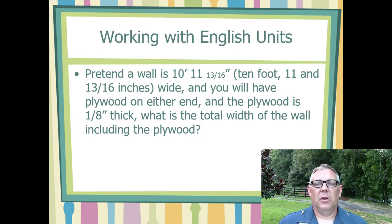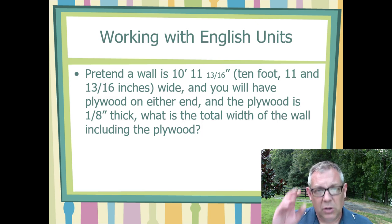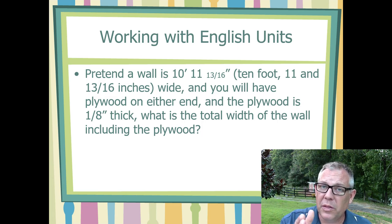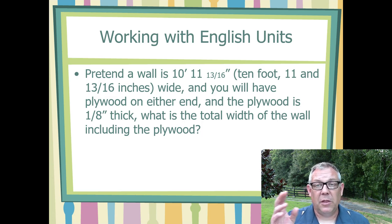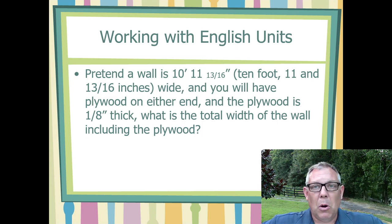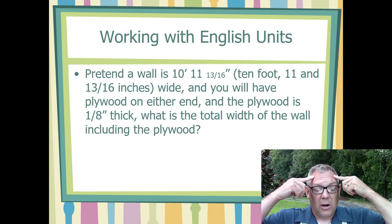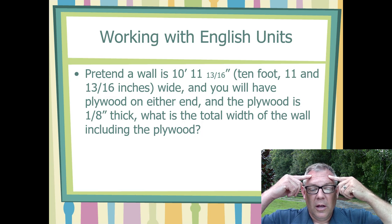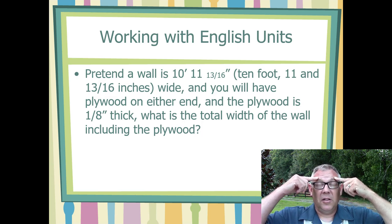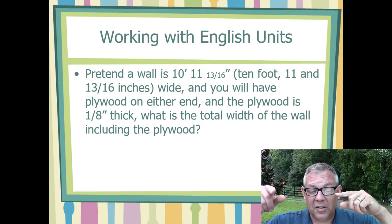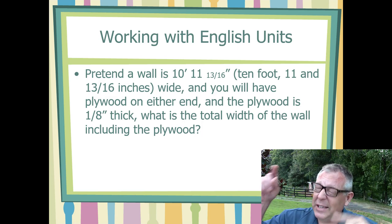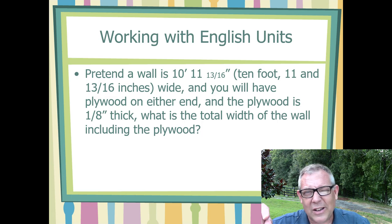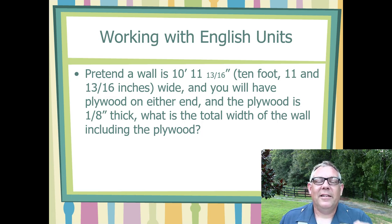Working with English units is a pain because of the fraction-based aspect. If you do any construction, say you've got a wall that's 10 foot, 11 and 13/16 inches, and you're adding plywood that's an eighth inch thick on each side — that's two-eighths, which is a quarter inch. So 11 and 13/16 plus 4/16 is 17/16, which is an inch and a sixteenth, making it 12 and a sixteenth inches — actually another foot, so 11 feet, 1/16 inch. You see my point: that's not easy to do.